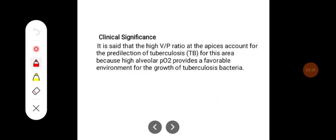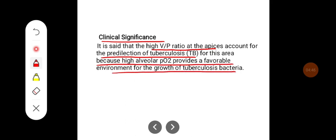Clinical significance: it is said that the high ventilation-perfusion ratio at the apices accounts for the predilection of tuberculosis for this area, because high alveolar PO2 provides a favorable environment for the growth of tuberculosis bacteria.